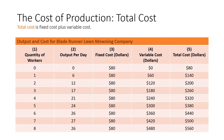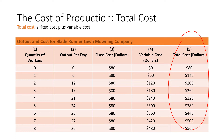A firm's total cost is the entire amount the firm must spend to produce a specified amount of output, found by adding fixed cost to variable cost. Blade Runner's total cost is reported in column 5 of our table. For example, the total cost of mowing 24 lawns is $80 plus $300, which equals $380 — fixed cost plus variable cost equals total cost.